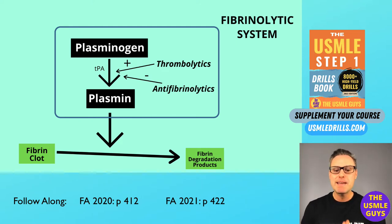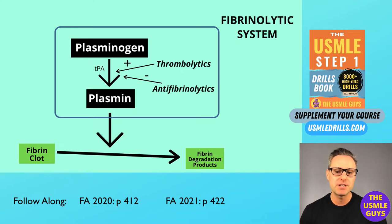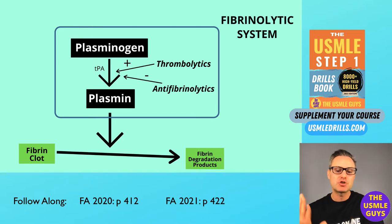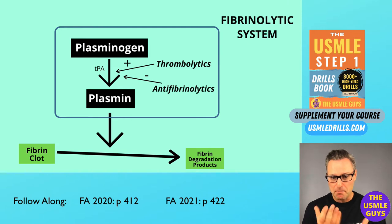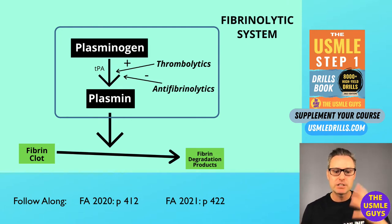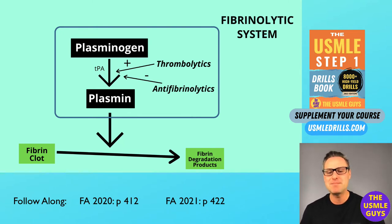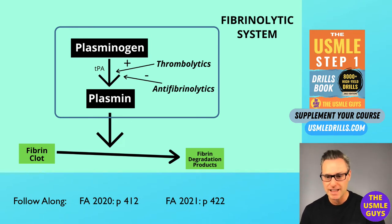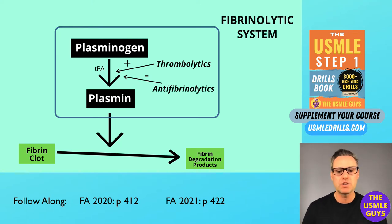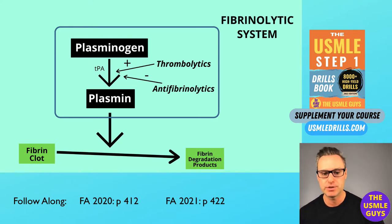Streptokinase isn't a protease with enzymatic activity, but it can form a complex with plasminogen that releases plasmin. The main difference between streptokinase and TPA is that streptokinase won't preferentially bind to clot-associated fibrin — it will bind to both circulating and non-circulating plasminogen. This means we prefer TPA because streptokinase produces significant fibrinogenolysis and clot fibrinolysis, while TPA is more specific. Urokinase has limited clinical use.